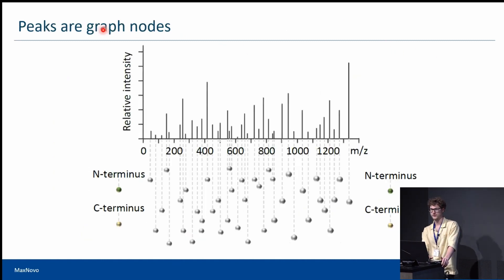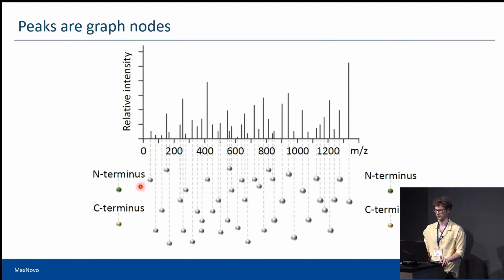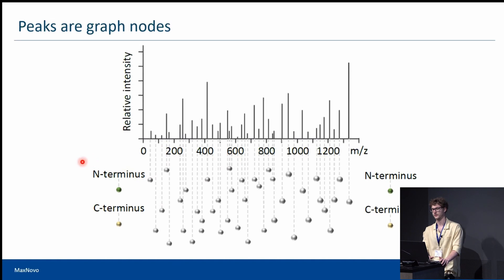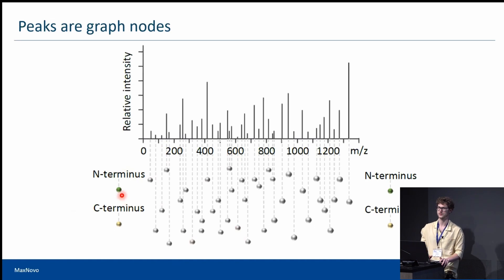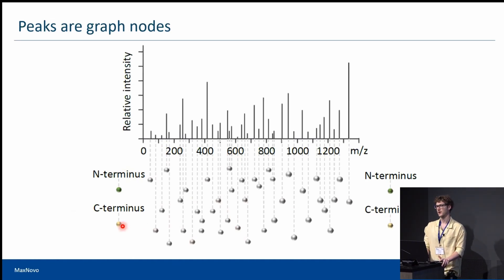This preprocessed scan is then represented in the form of a graph where each node corresponds to a peak, and the distance between nodes corresponds to the MZ distance between peaks. We also add four additional nodes corresponding to the N and C terminus from the left and right side. This way we can construct sequences from the B series going left to right and from the Y series going right to left, taking nodes only from a single ion series.